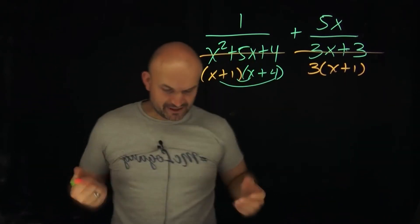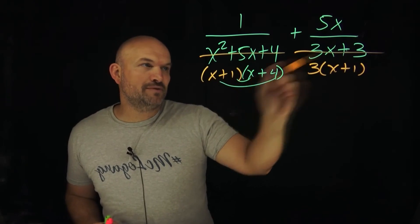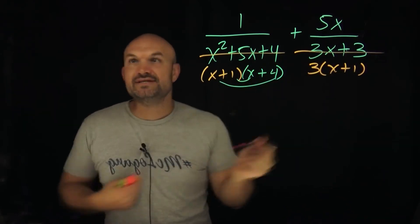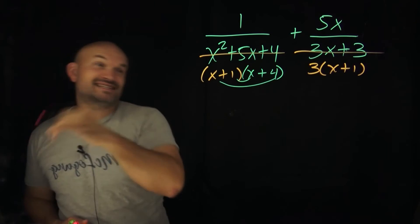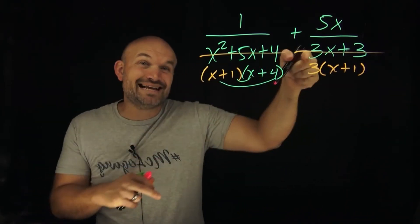So now let's finish the problem. We have (x+1) and (x+4), and we have (x+1) and 3. So in this case, I can say my LCD, the least common denominator, is going to contain (x+1), (x+4), and 3.